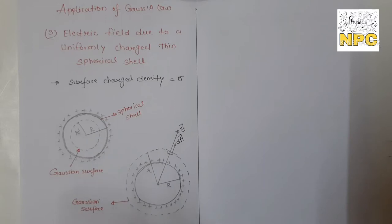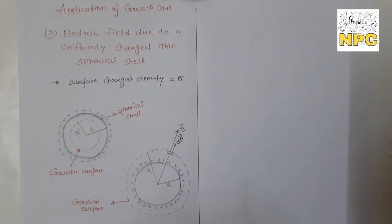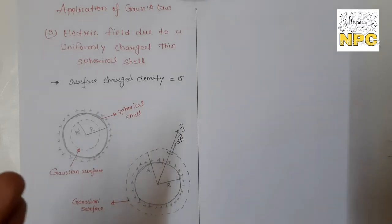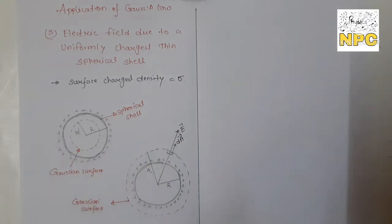We will find the electric field through a spherical shell — where to find it and in which position to draw the Gaussian surface, all in this video lecture. First of all, we have a thin spherical shell, which we call a hollow sphere. A hollow sphere means nothing is inside it — the charge is distributed on the surface. If charge is distributed inside, it is considered a volume charge and it is called a solid sphere.